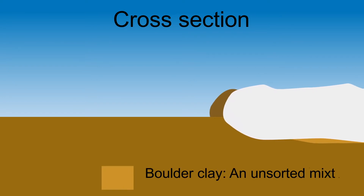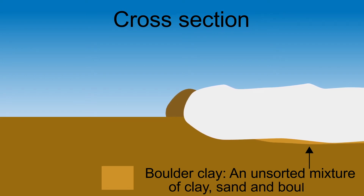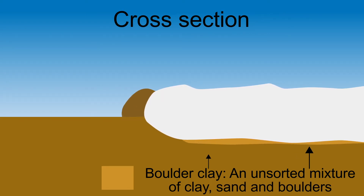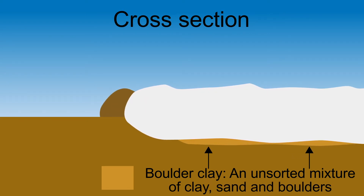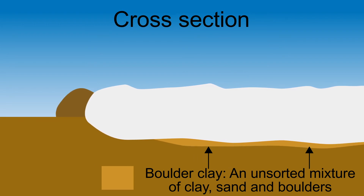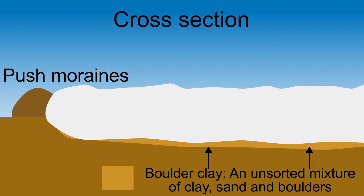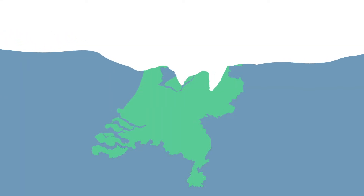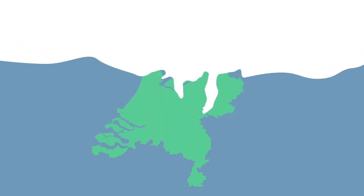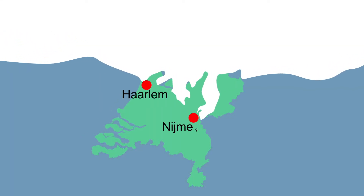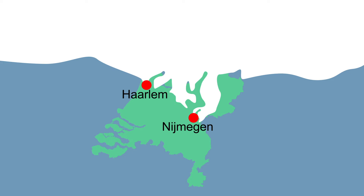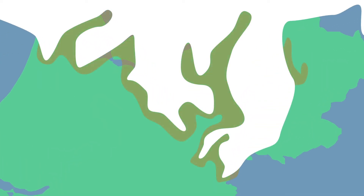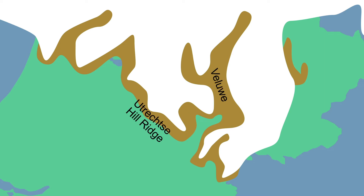The moving ice also pushed away parts of the soil. Debris carried along by a glacier is accumulated, forming moraines — these hills are called push moraines. The land ice from Scandinavia slowly moved to the Netherlands, approximately to the Haarlem-Nijmegen line, pushing sediment upwards and creating push moraines at the end of the land ice. These push moraines are now known as the Utrecht Hillridge, the Veluwe, and Saaland Hillridge National Park.